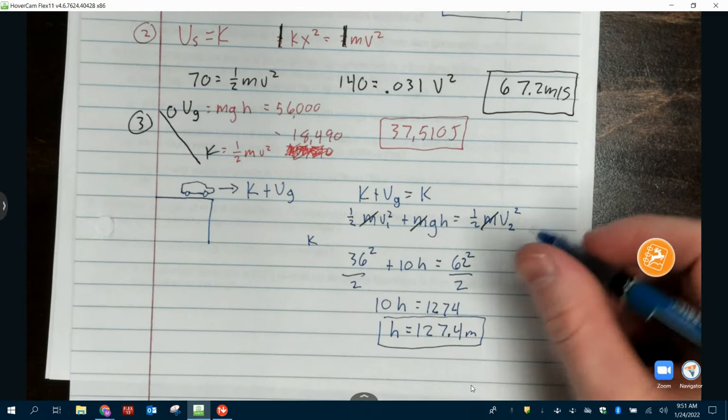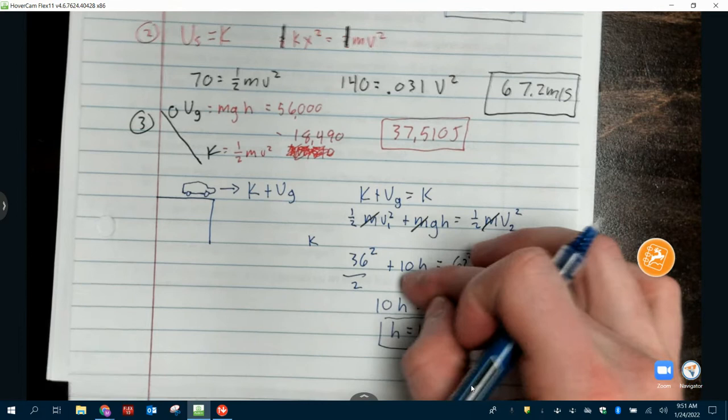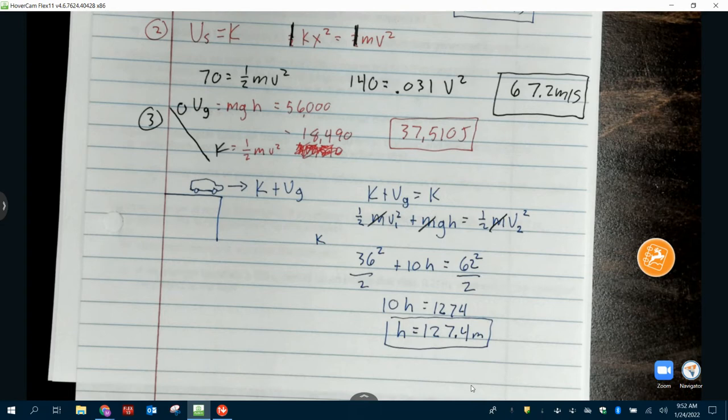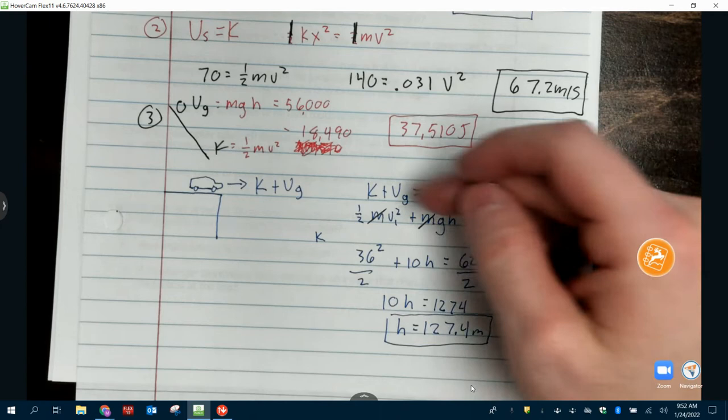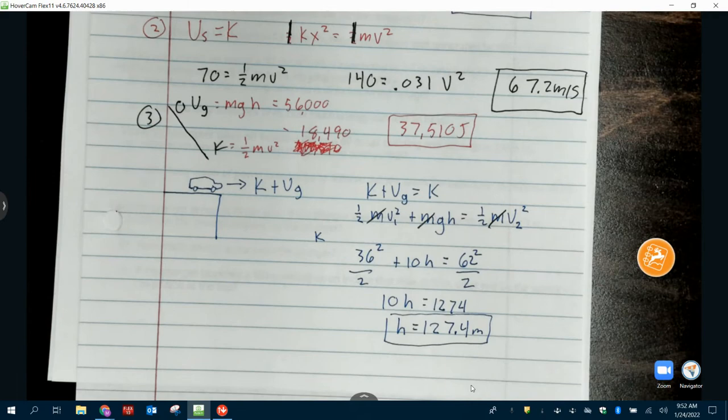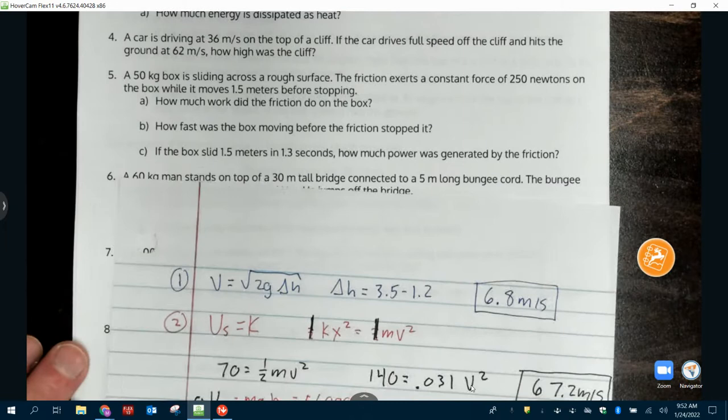So it's much easier to plug it in like this, change this to a number, change this to a number, subtract them, and then divide by whatever's in front of H. Now, again, on the test, make sure we're showing our work. If you have nothing in a wrong answer, that's a minus 5 or minus 10, whatever the question's worth. If I can see you had this set up right here, you missed this, it's a minus 2. Big difference on a test.